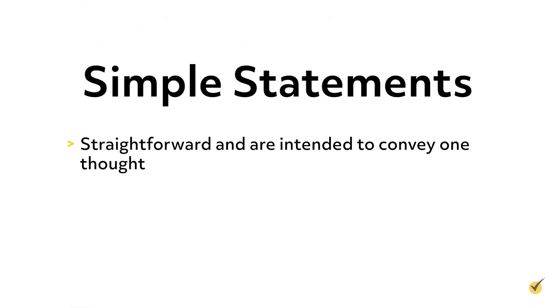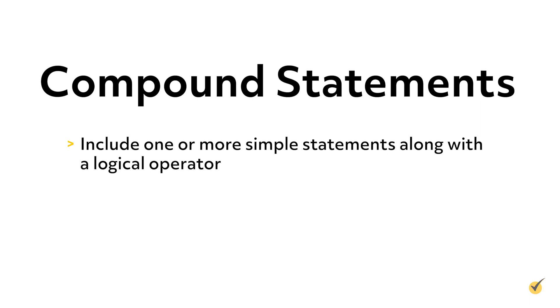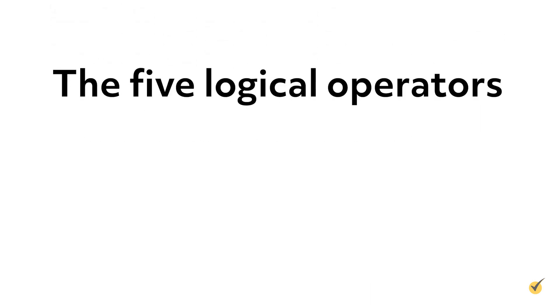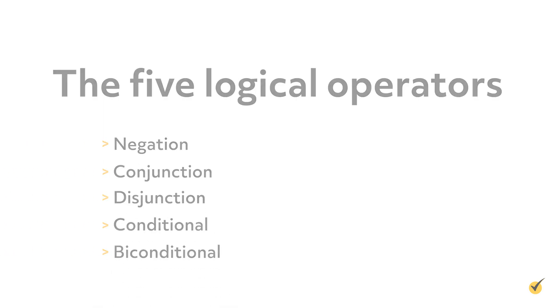Simple statements are straightforward and intended to convey one thought. Compound statements, on the other hand, include one or more simple statements along with a logical operator. The five logical operators are negation, conjunction, disjunction, conditional, and biconditional. If that sounded like gibberish, there's no need to worry — let's clear any confusion by going over what each of these mean.